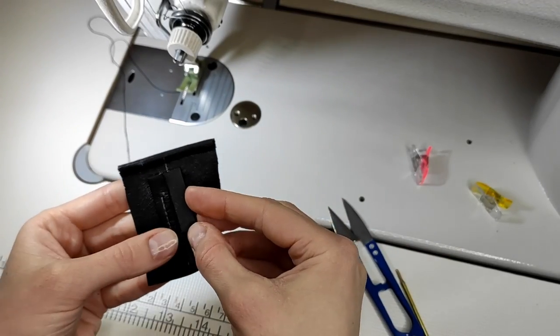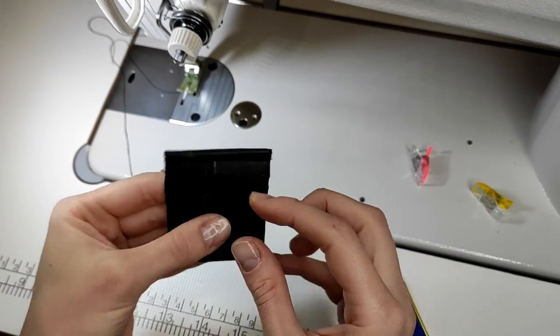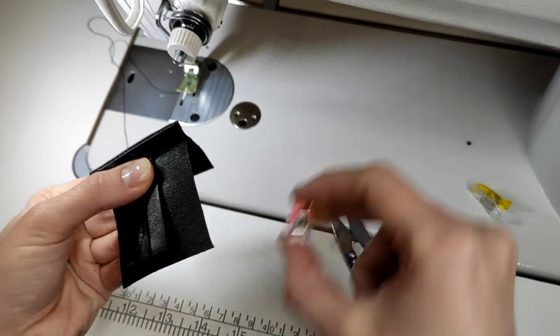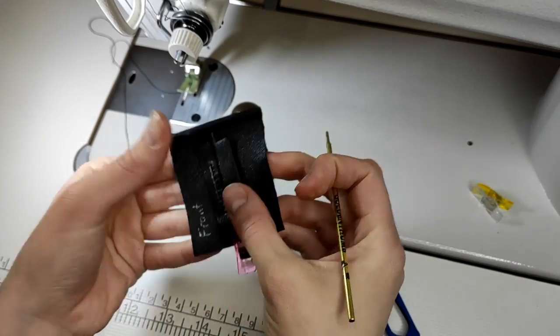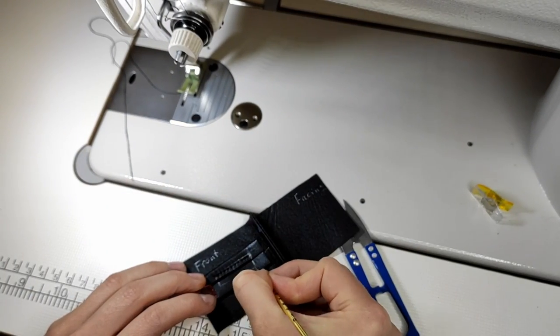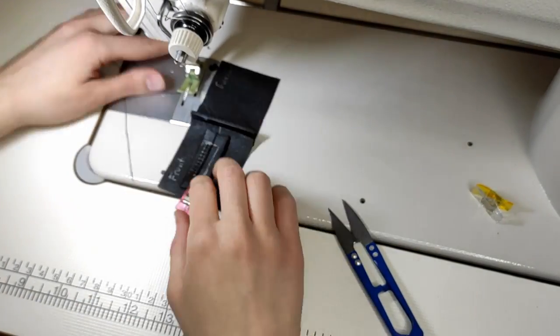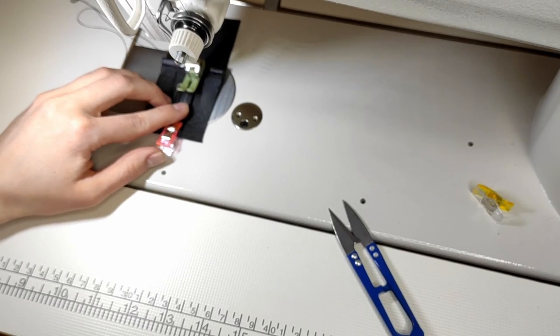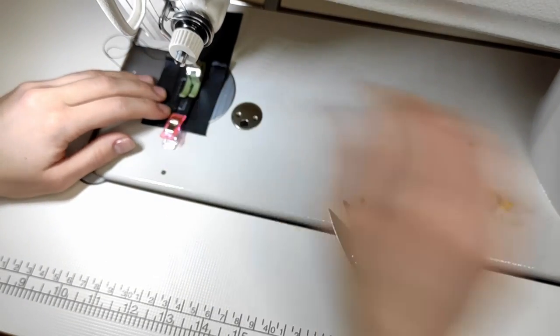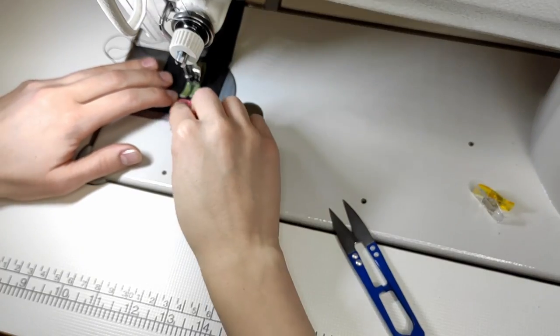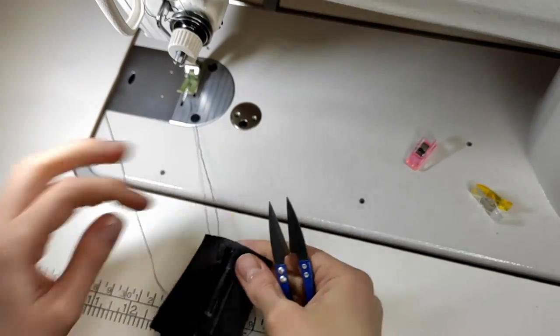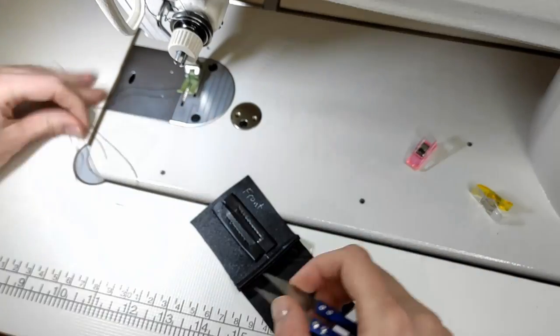I do the same thing with the second welt. Aligning the raw edge with the center, marking everything and stitching. I cut all the threads right away so they don't interfere with our sewing.